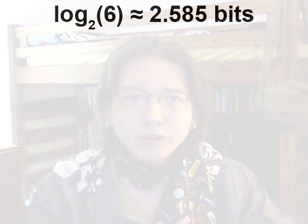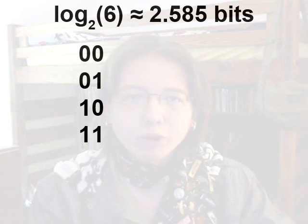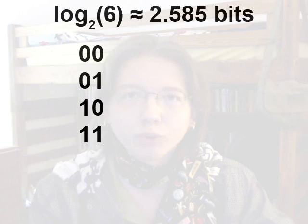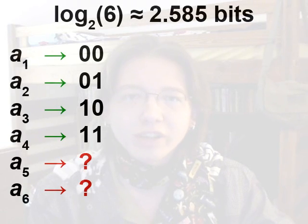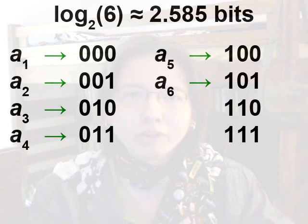Last time, I explained how the entropy of an information source tells us that, on average, we will need at least that many bits in order to represent a symbol of the information source. For example, a fair die with six symbols has an entropy of about 2.585 bits. If we tried using only two bits to represent the symbols of the die, we would have a problem, because two bits only have four possible states, and that's not enough to cover six symbols. But if we used three bits, then three bits have eight possible states, which is enough to cover six symbols.